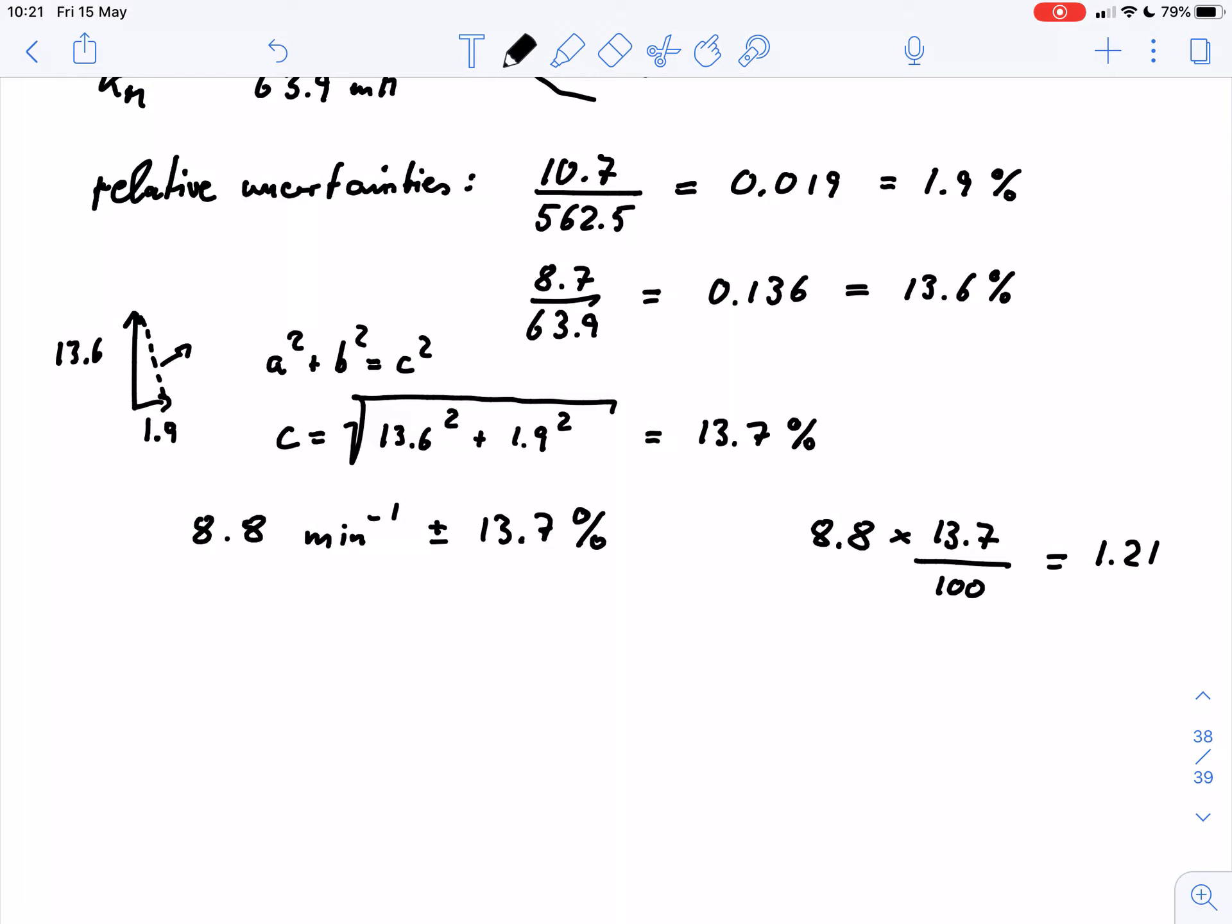Now we need to be careful in terms of the significant figures. Here we have determined that to basically three significant figures, or here we have only two significant figures. So we really need to be very careful that we are consistent with our significant figures. And what we can do is in this case, we can use our absolute value and round this to the same significant figures. So we would get 8.8 plus minus 1.2 minute to the minus 1.